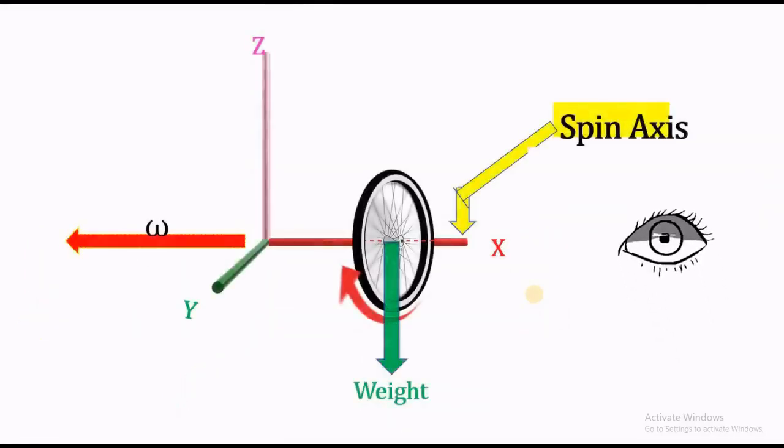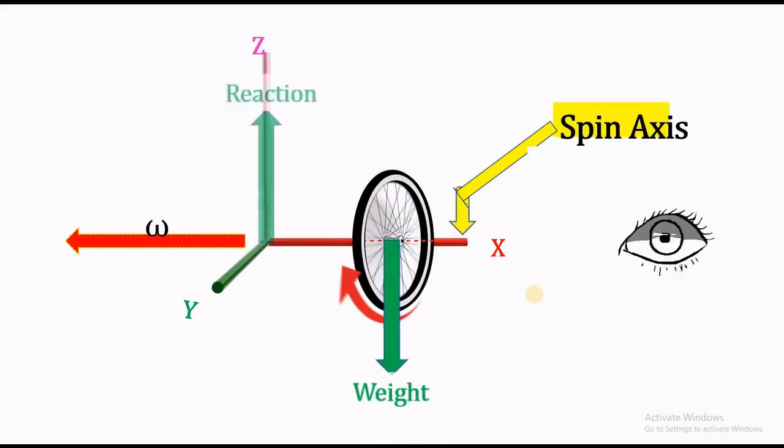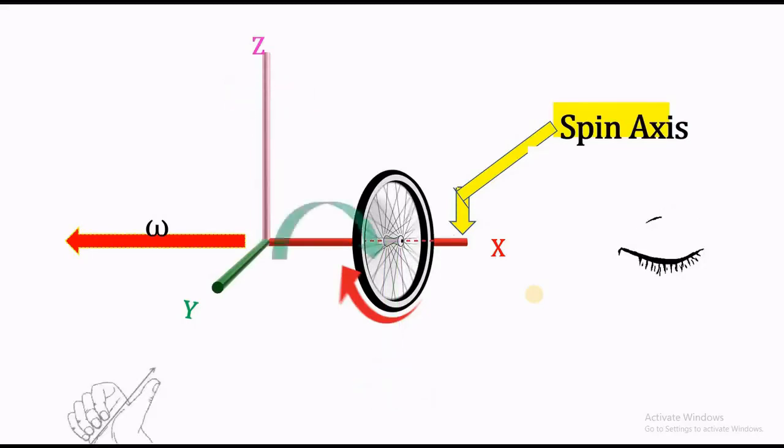Now weight of the disk causes a clockwise couple to form above the y-axis. Again applying the right hand thumb rule, the couple vector points towards the negative y direction.